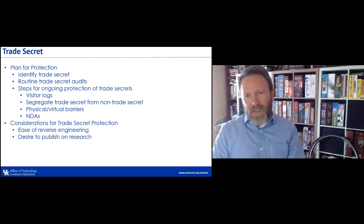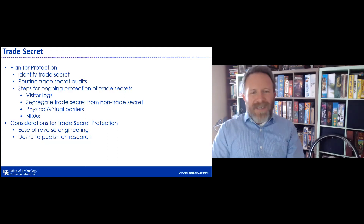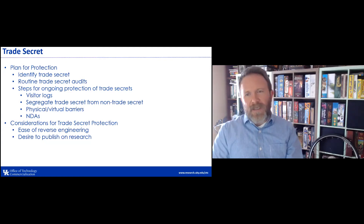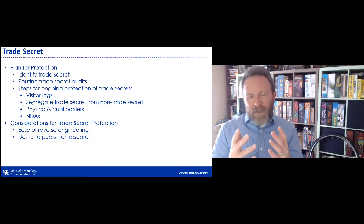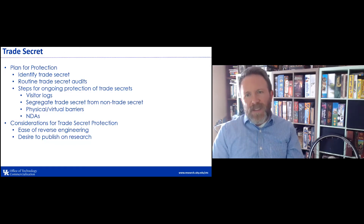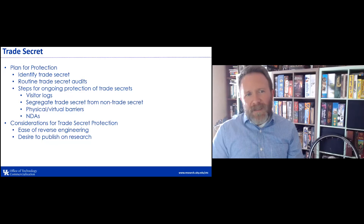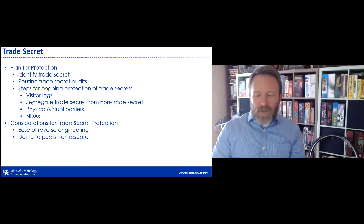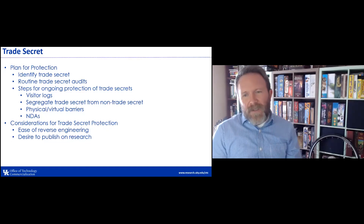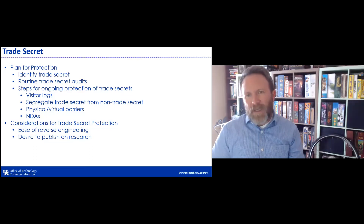For trade secret protection, you must identify the trade secret, have a routine for trade secret audits, and take steps for ongoing protection — whether it's visitor logs, segregation of trade secret from non-trade secret information, physical or virtual barriers, and NDAs. Things to consider: the ease of reverse engineering — if something is easily reverse engineered, there's no point in having a trade secret. The harder it is to reverse engineer, the more likely a trade secret would be beneficial. And you always have to balance that with the desire to publish on research — if there is a desire to publish, a trade secret is obviously not the best vehicle to protect that technology.